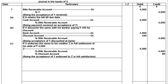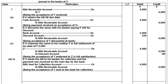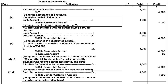In part D: if X sends the bill to his banker for collection. Entry D1 — bills sent for collection account debited to bills receivable account, Rs. 4000, being the acceptance of Y sent to the bank for collection. Entry D2 — bank account debited to bills sent for collection account, Rs. 4000, being the acceptance of Y collected by bank.